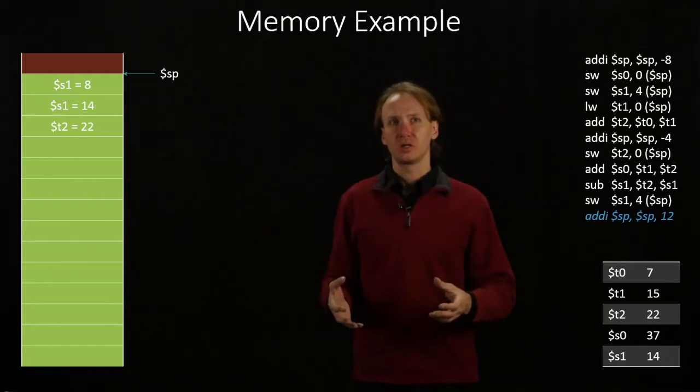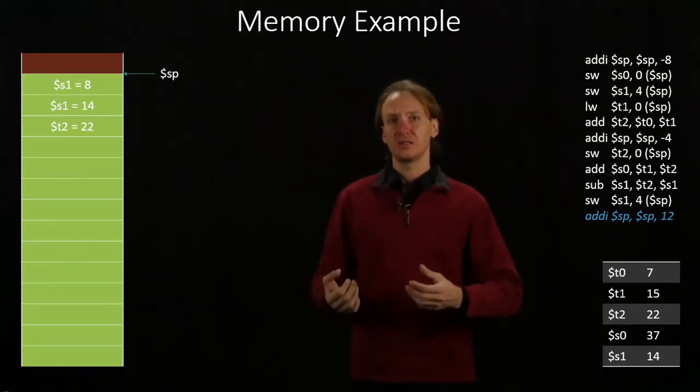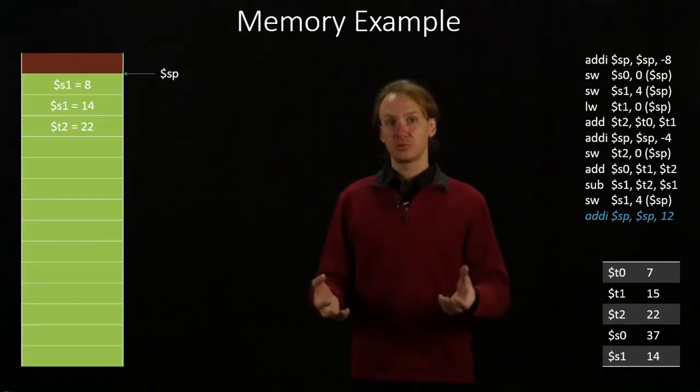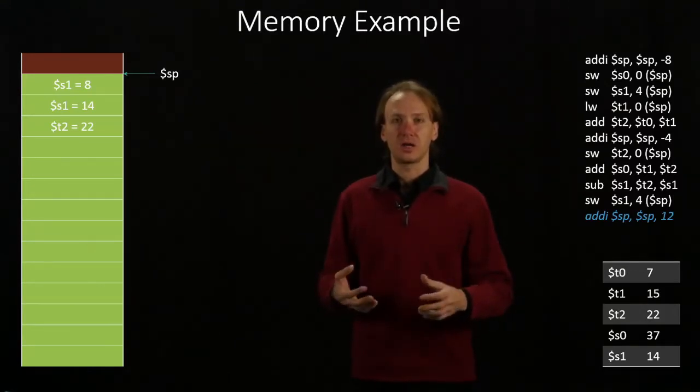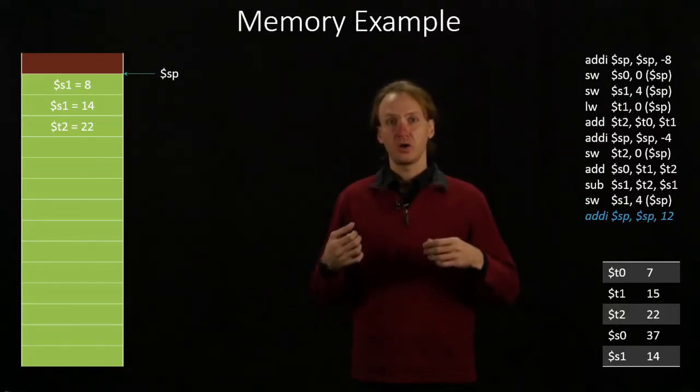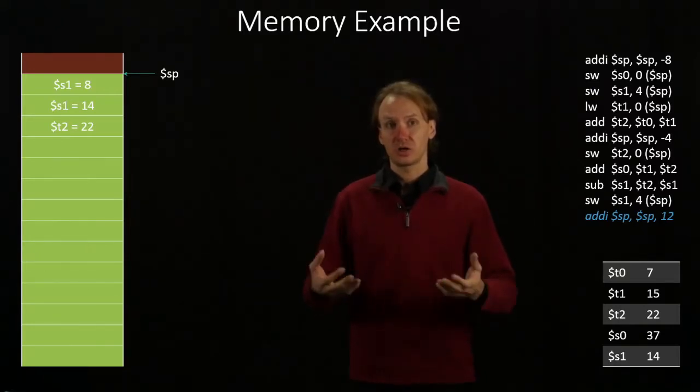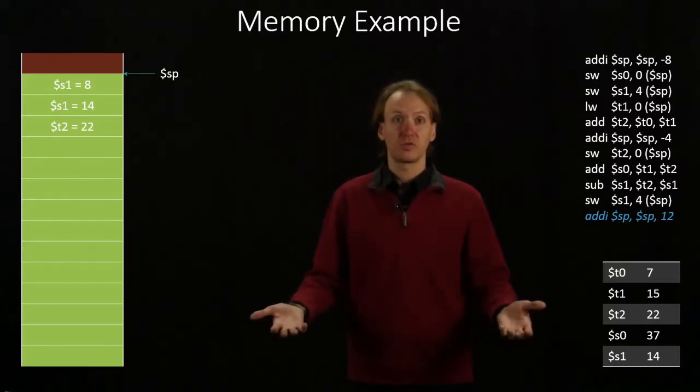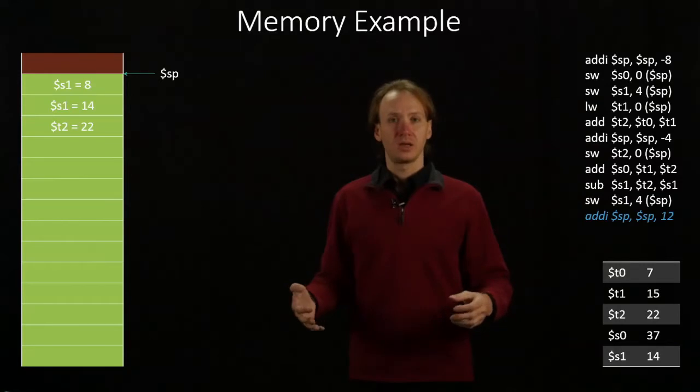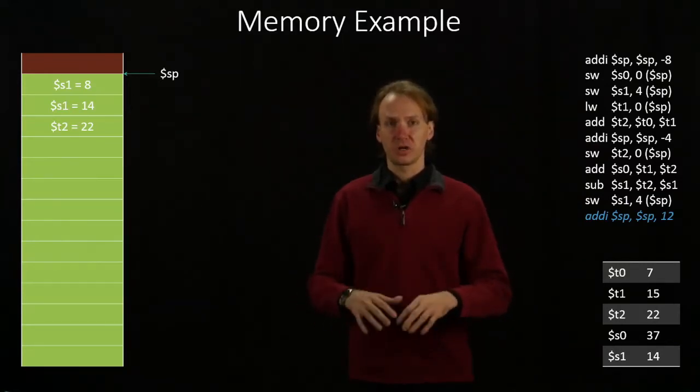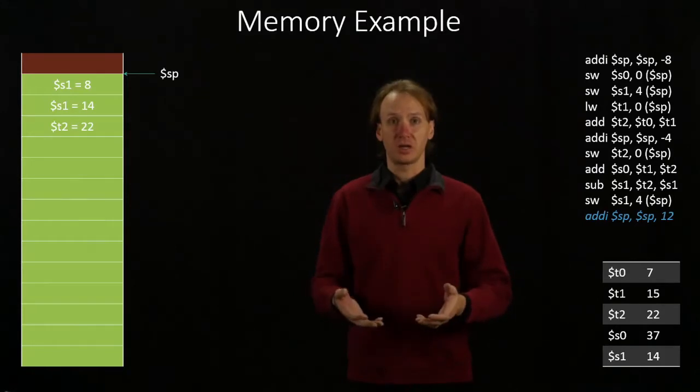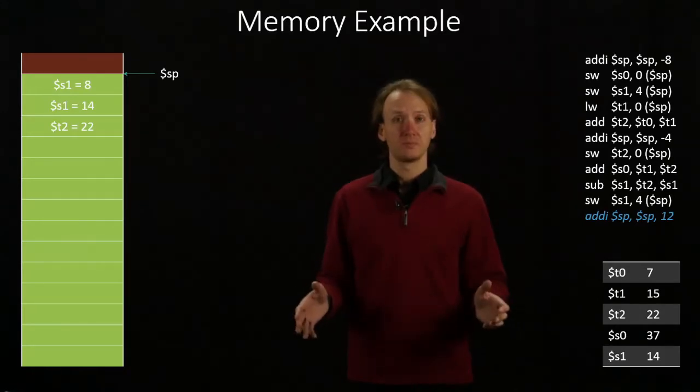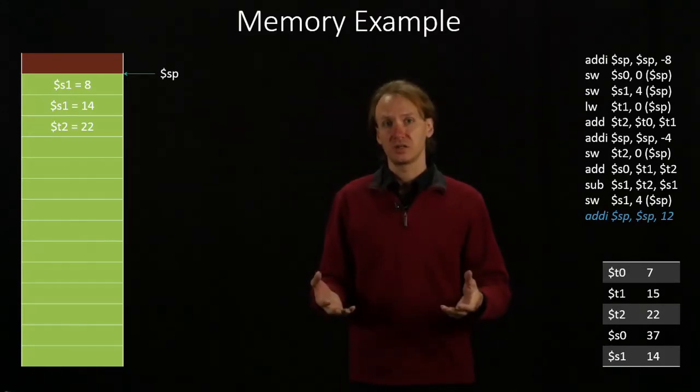One other point to make at this point is that we can allocate and deallocate memory in any size that we want. When I'm writing code, I like allocating large blocks of memory. If I know that I'm going to need to put five integers onto my stack, then I'll just make room for five integers. And then when I get to the end of my function, I'm ready to deallocate memory. I just deallocate all of the memory that my function allocated and do that all at once. This turns out to be more efficient than the alternative.